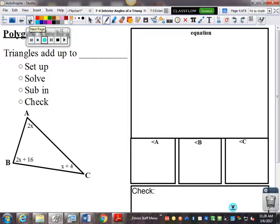One more. All right. So, angle A is 2x, angle B, 2x plus 16, and angle C, x plus 4. And, our angles add up to equal 180.